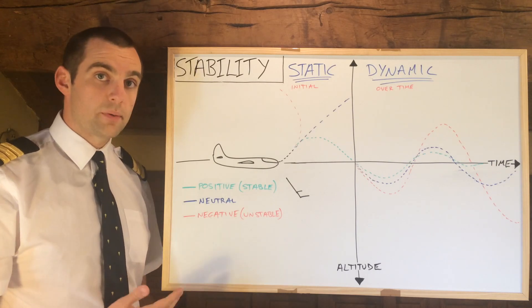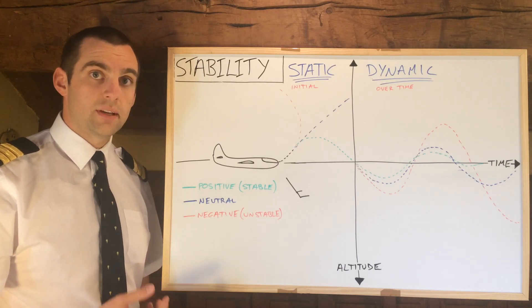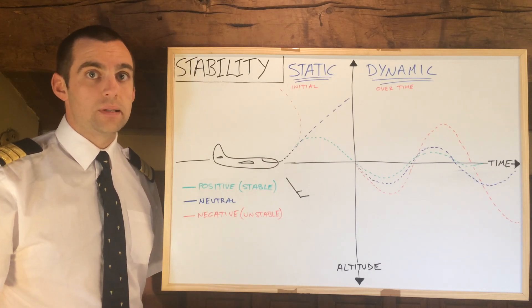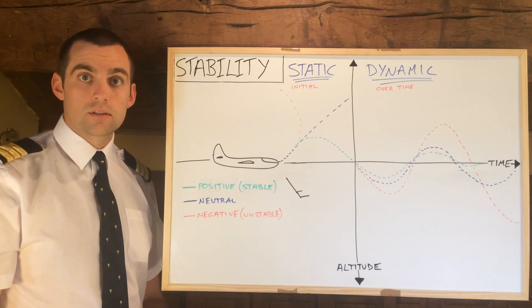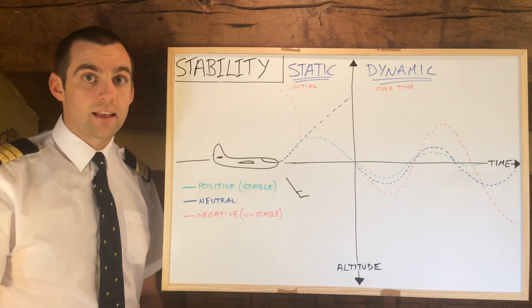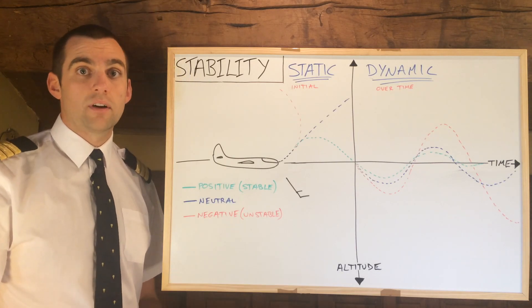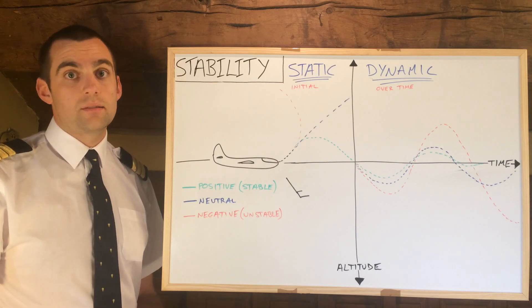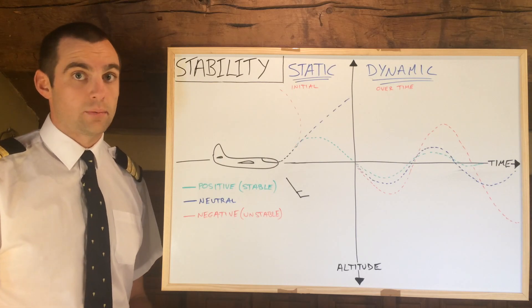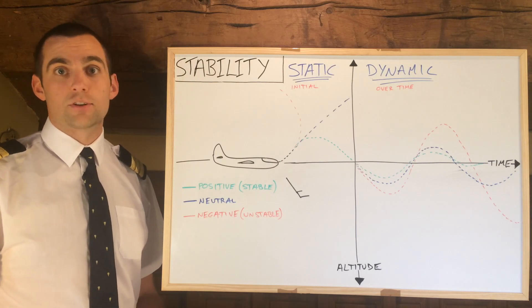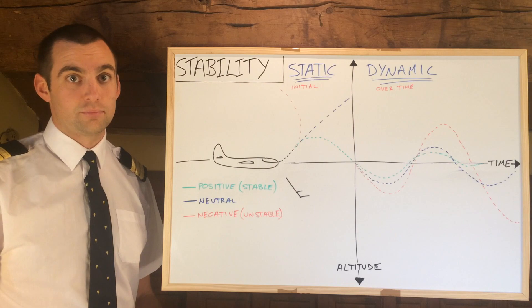What does the type of stability depend on? Essentially how the aircraft has been designed — nothing else. Some aircraft are designed to be inherently unstable, such as fighter jets. Some aircraft are designed to be inherently more stable, like your Cessna, which is virtually impossible to stall.